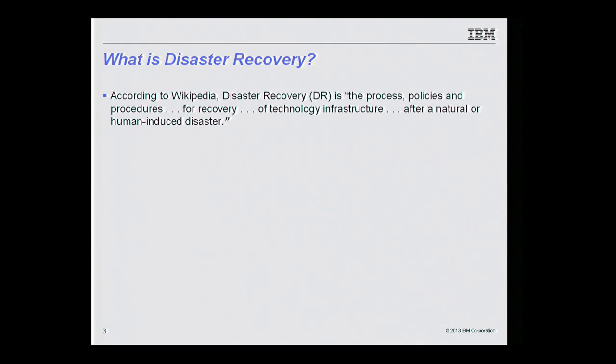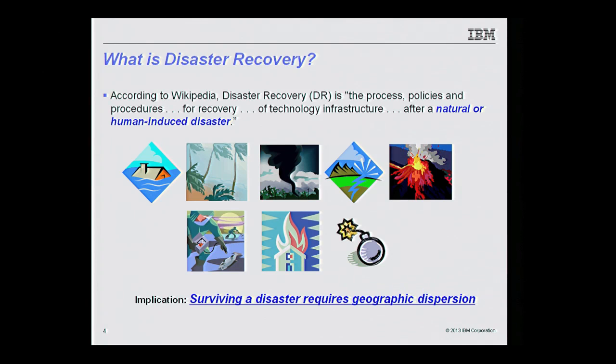Let's start with what is disaster recovery. The definition from Wikipedia: disaster recovery is the process, policies, and procedures for recovery of technology infrastructure after a natural or human-induced disaster. Natural or human-induced disasters include floods, hurricanes, tornadoes, earthquakes, potentially volcanoes, poisoning events, fires, and terrorism — things that can take out an entire data center. We're not worried about a device or server failing; we're worried about a data center being unusable either permanently or for a significant period.